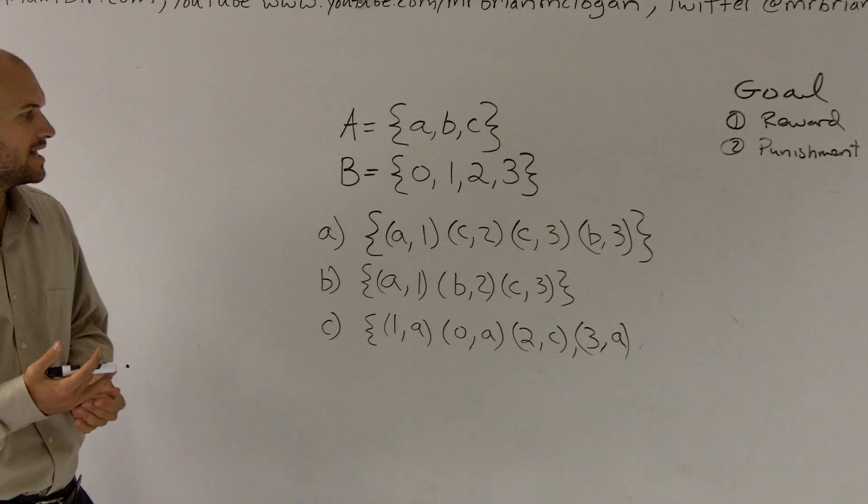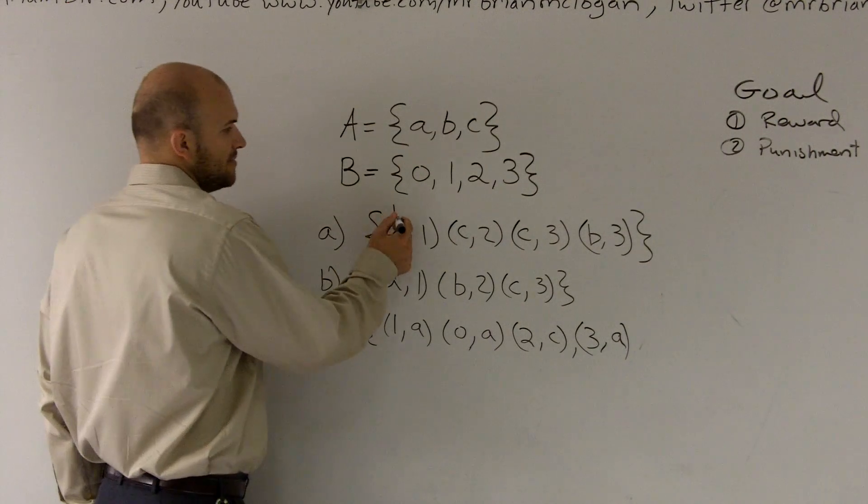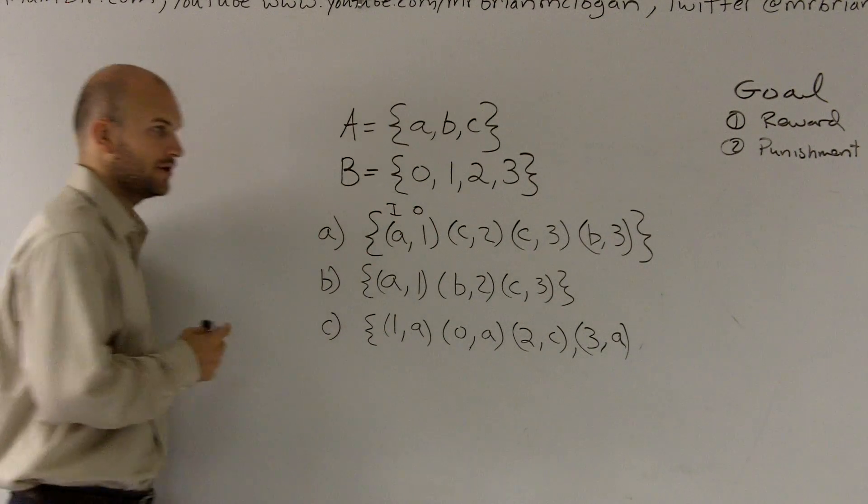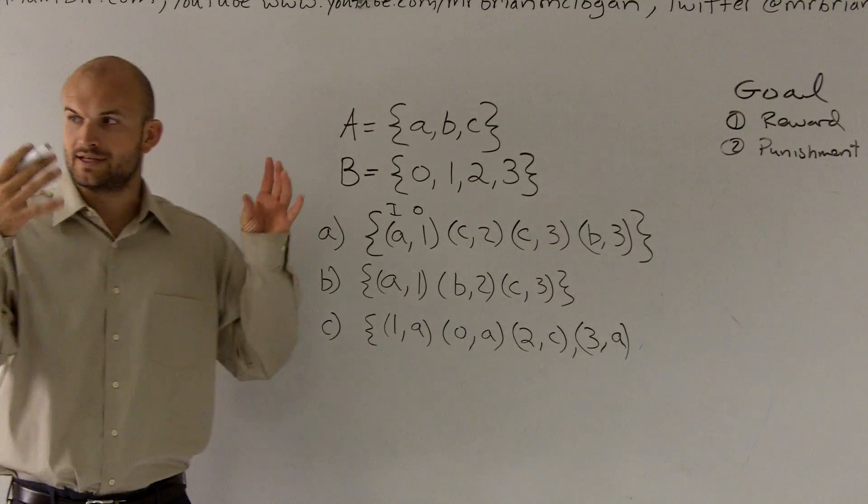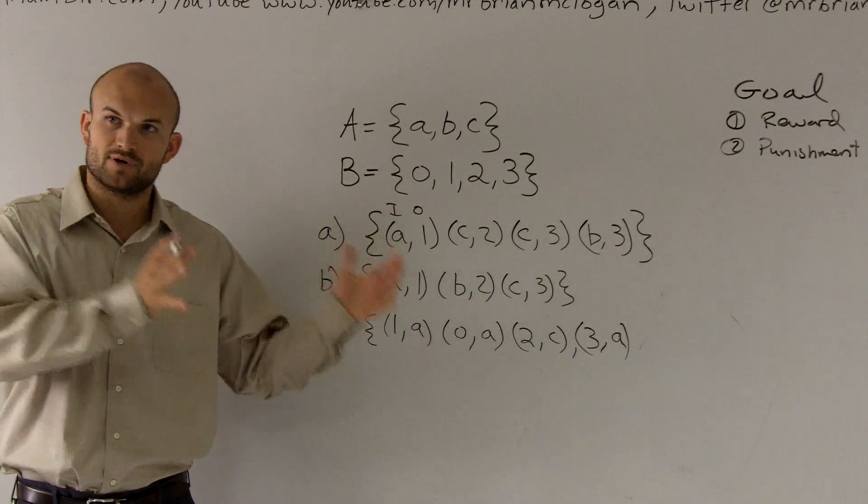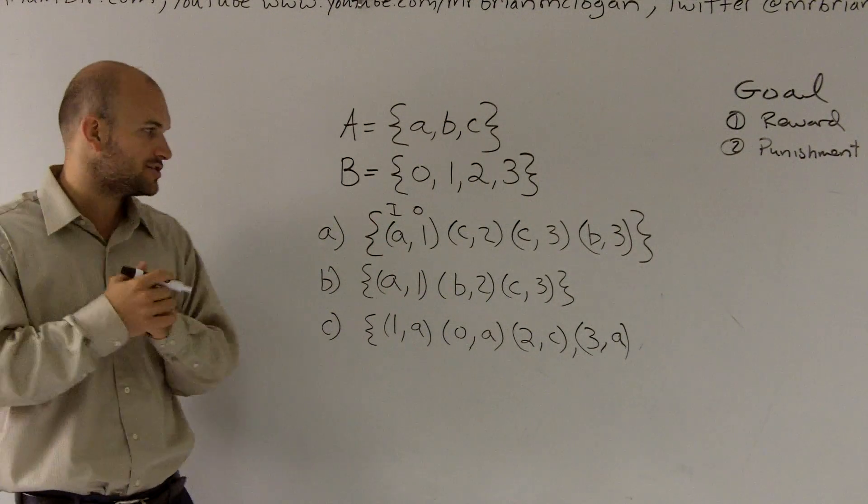Now, one thing to remember with a set of ordered pairs is we have an input and we have an output. If you remember from my old review, we did our two sets, set A and set B, and remember we had the input relationship to the output relationship.